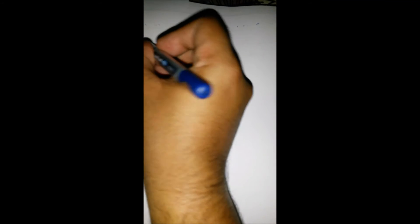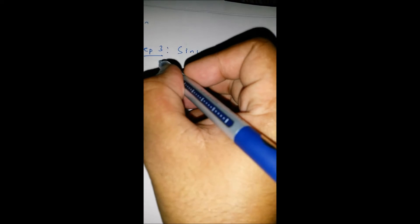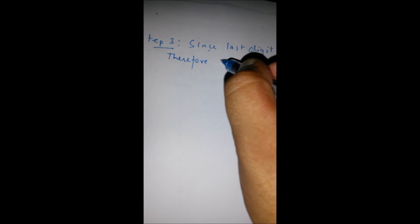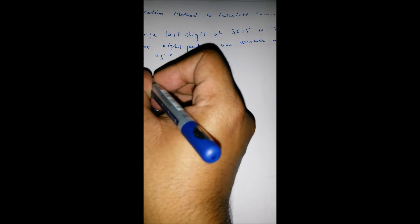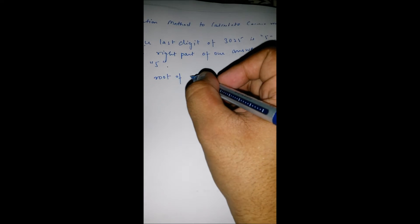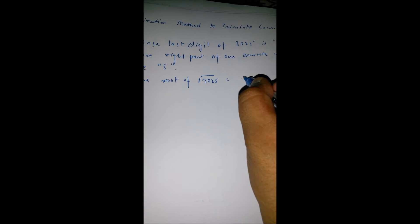Step 3: since the last digit of 3025 is 5, therefore, the right part of our answer will be 5. So, square root of 3025 is 55.